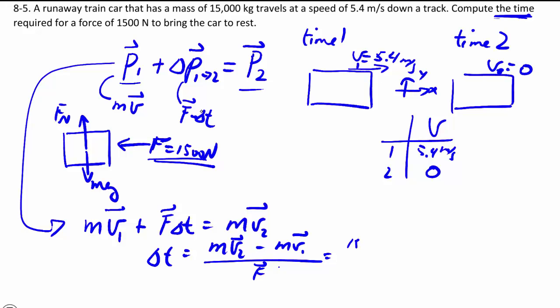And so we have 1500 kg times my final speed of 0 m per second minus 1500 kg times my initial speed of positive 5.4 m per second, all divided by my force of 1500 newtons but to the negative x direction. So the sign should work out.